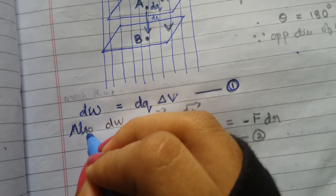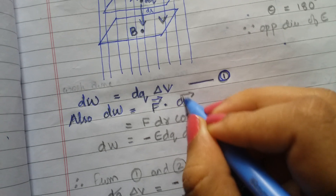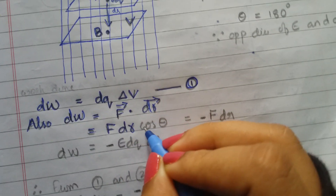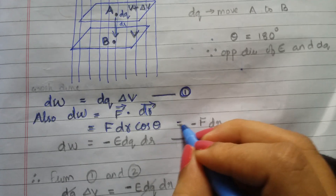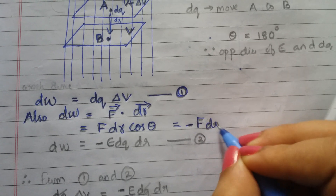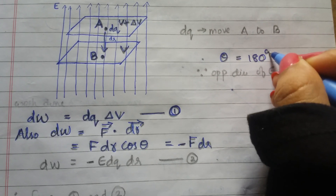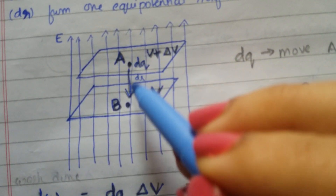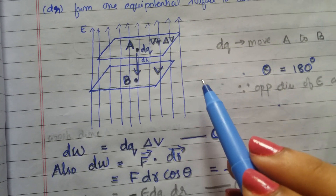We also know another formula for work done: work done equals force into displacement, that is F dot dr. Since it is a dot product, it includes cos theta, so it becomes F·dr·cos theta. This equals minus F·dr. The minus comes because theta is 180 degrees — the direction of the electric field and the direction dq is moving are opposite to each other.